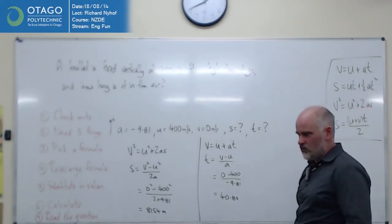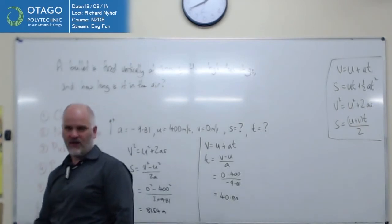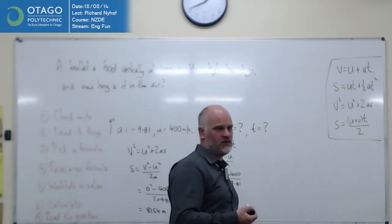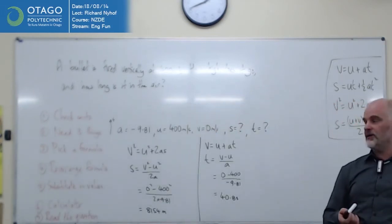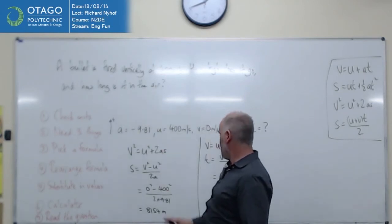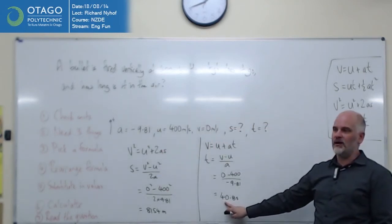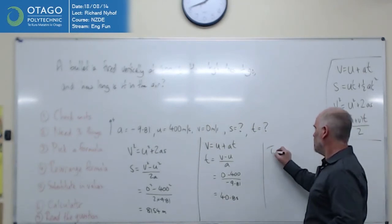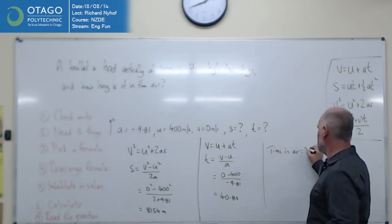Step 7: Read the question. Have you actually answered the question that was asked or have you read what you assumed was being asked? So read that question and check out have we actually answered what we asked for. How long is it in the air? This is the time to get to the top, not to come back down again. That's only half the story. So the time in the air is twice that. One's up and one's down.